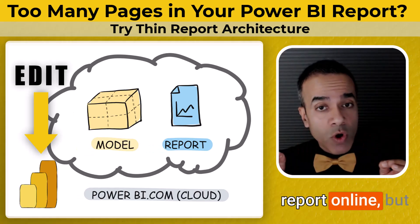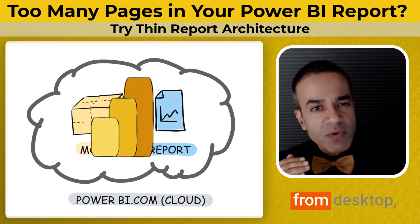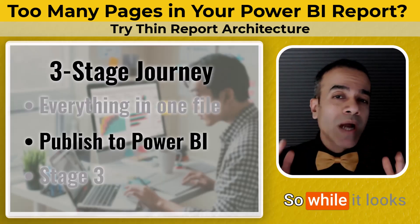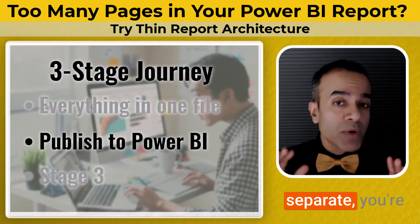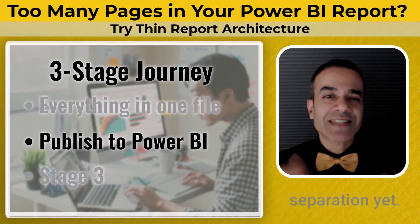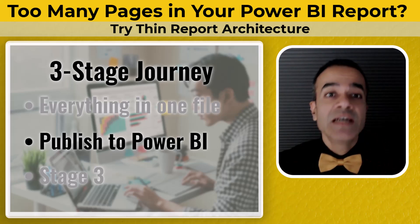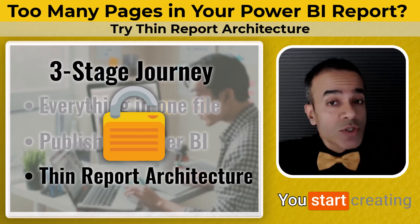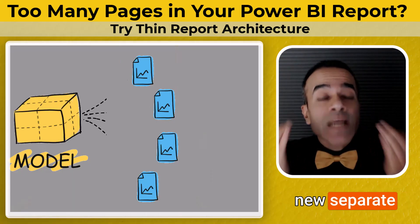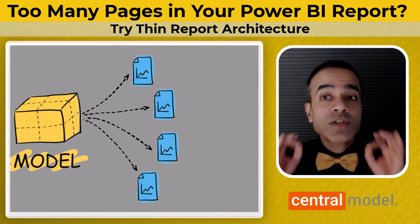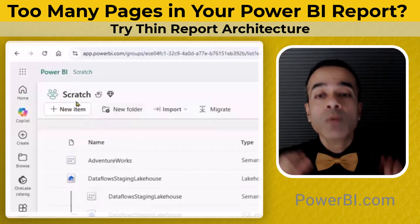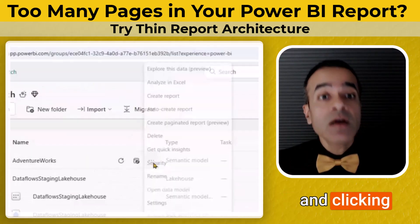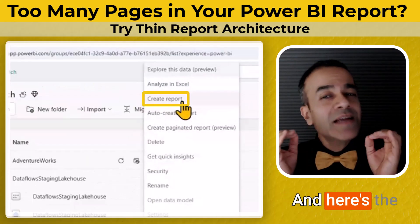But they're still somewhat tied together. You can edit the report online, but if you republish from desktop, those edits get wiped out. So while it looks like they're separate, you're not truly using that separation yet. Stage three is where the real unlock happens. You start creating new, separate reports that connect to your central model — you do this on Power BI.com by finding your semantic model and clicking 'Create Report.'